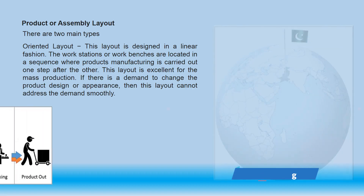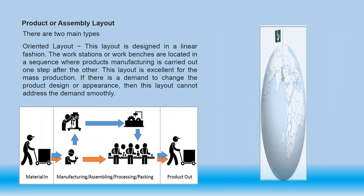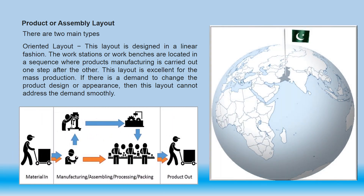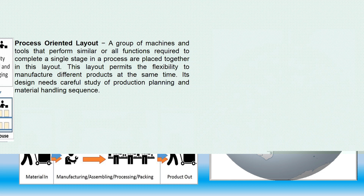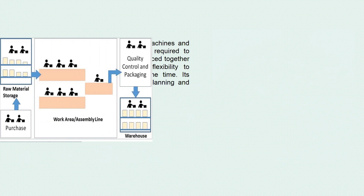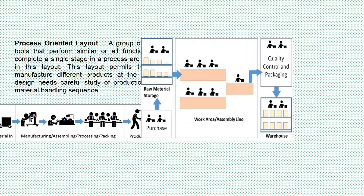There are two main types of shop floor layout. The first is the product-oriented layout, which is designed in a linear fashion. Workstations or workbenches are located in sequence where product manufacturing is carried out one step after the other. This layout is excellent for mass production. However, if there is a demand to change the product design or appearance, this layout cannot address that change smoothly.